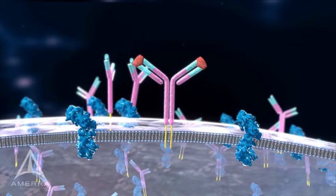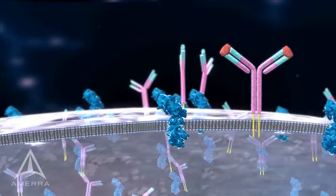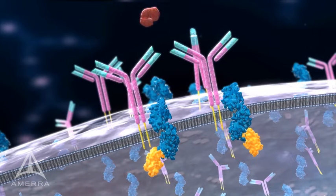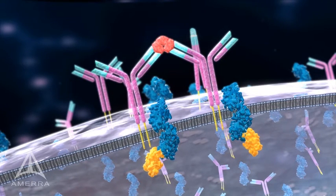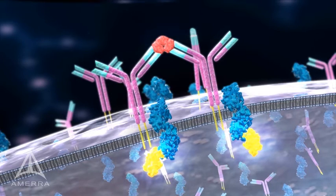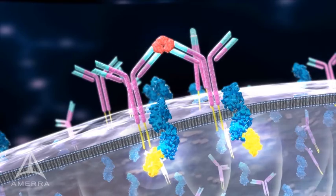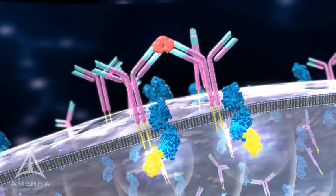When an antigen comes along that is able to bind to the antibody molecule in a specific way, signaling pathways are triggered within the B cell. These signals stimulate the B cell to begin dividing to produce multiple B cells, all of which are capable of producing antibody proteins that bind to the triggering antigen.